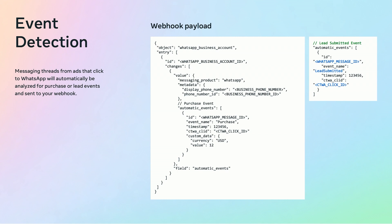In this slide, we will dive into the technical details of how event identification works through webhooks. When a messaging thread is initiated from an ad that clicks to WhatsApp, our machine learning model automatically analyzes the conversation for purchase or lead events. These events are then sent to your webhook, providing real-time insights into customer interactions. The webhook payload begins with the WhatsApp business account and business phone number fields, which help you identify which business the webhook is for. The automatic event array captures specific events — for example, a purchase event includes details like the event name, timestamp, click ID, and custom data such as currency and value. Similarly, a lead submitted event is structured with the same information but without the custom data field.